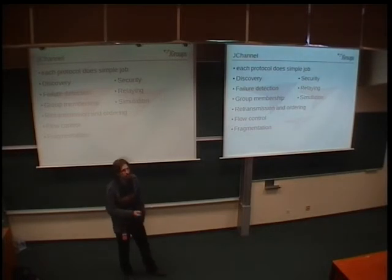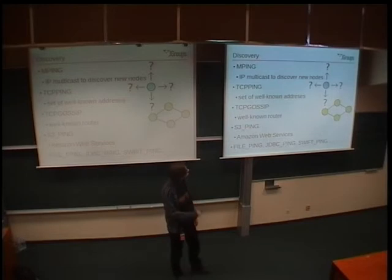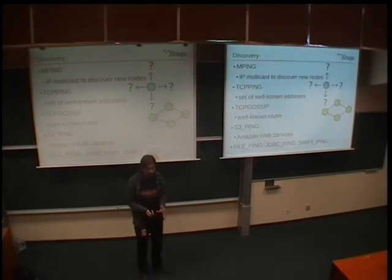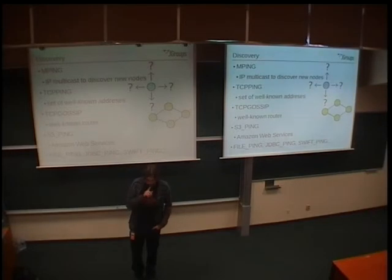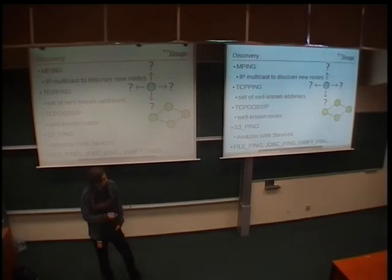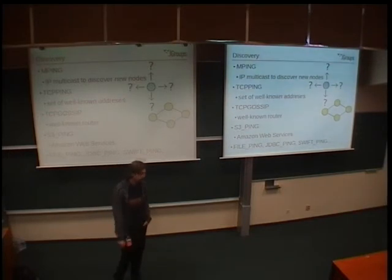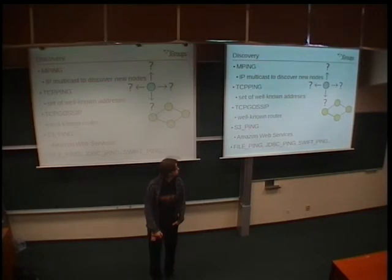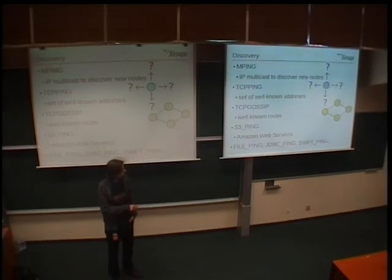There are three types of messages in JGroups: regular, which should be ordered; out of band, which does not have to be; and some internal messages. For each message type there's a specific thread pool. To the responsibilities of the stack, there's a discovery responsibility. When a new node is spawned it has to know which other nodes are around in the network. It does discovery using MPing which does regular IP multicast over the network, or TCP ping protocol which has a pre-configured set of well-known addresses.